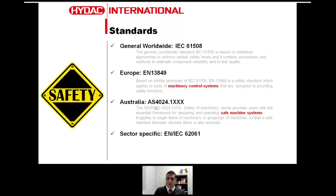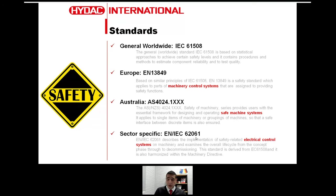Looking at sector-specific standards, IEC 62061 is mainly derived from IEC 61508 and is written around electrical control systems — examining the overall life cycle from the concept phase all the way through to commissioning. When designing a system, we want to see it through its entire operation life cycle and ensure at various stages it is a safe-to-use machine.